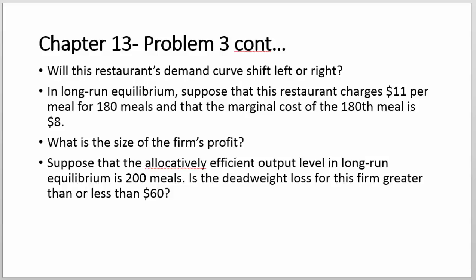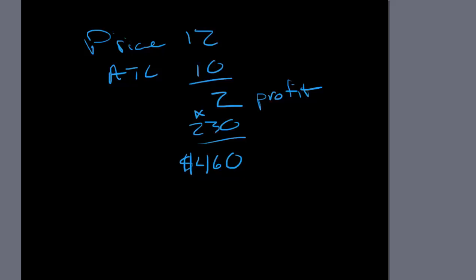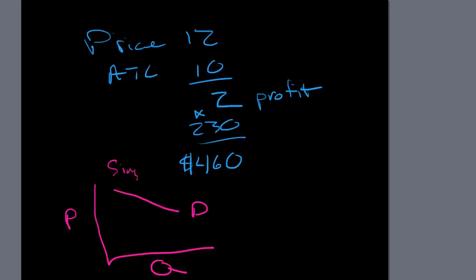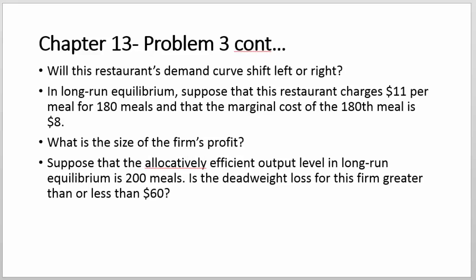Will this restaurant's demand curve shift left or right, assuming there's entrance into the market? If we draw this out — here's price, here's quantity, here's our demand curve — if there's entrance into the market for a single firm, assuming more competition, the single firm's demand curve is going to decrease. That decrease is going to be a shift to the left.